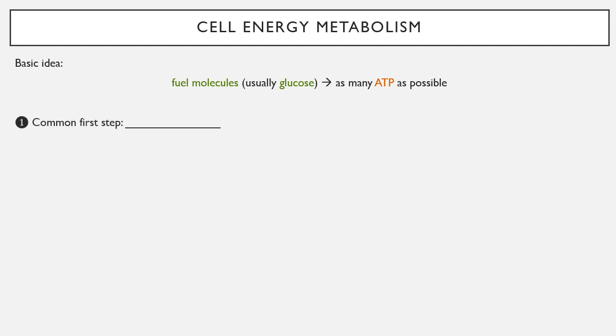If you're starting with glucose, there is a common first step: glycolysis. Glycolysis is the process of breaking glucose. Glyco means glucose or sugar, lysis is a Greek word meaning to break down. So in the cytoplasm, one glucose molecule can be broken down into two pyruvate molecules.